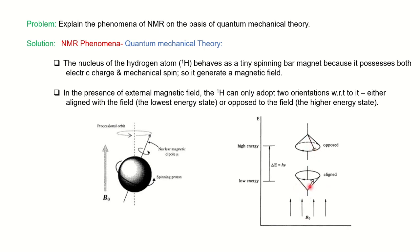The aligned orientation has the lower energy, and the opposed orientation is at higher energy. The difference between the two orientations is represented by ΔE, where energy is equal to hν. Based on this, the proton nucleus can adopt only two orientations — either aligned or opposed.